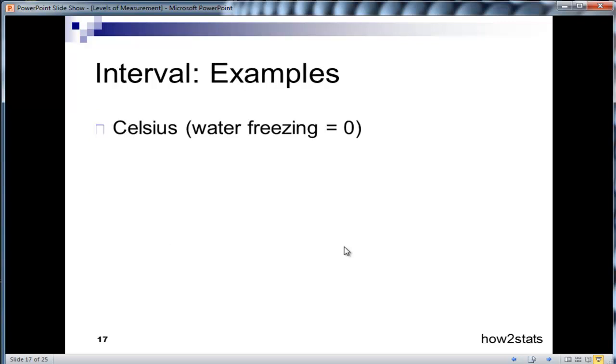So Celsius is a commonly used or suggested and used interval scale. Zero is equal to water freezing, but that isn't the actual absence of temperature. There is no real meaningful absence of temperature on the Celsius scale. But there is a continuum associated with Celsius degrees, and we can add and subtract them meaningfully. And I'll show you an example of that in a minute.